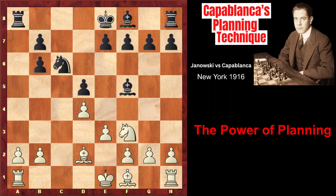We have reached a very important moment in this game. The natural looking standard moves for black would have been e6, Bd6, castling, finishing the development. However, Capablanca had a plan for the middle game. And in order to implement this plan, he had to violate the opening principles and move an already developed piece for the second time, before finishing the development. After the implementation of his plan, he would get rid of his main weakness and turn this weakness into his strength. You can pause the video and try to find Capablanca's plan.